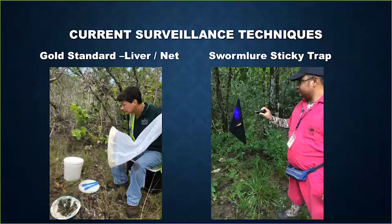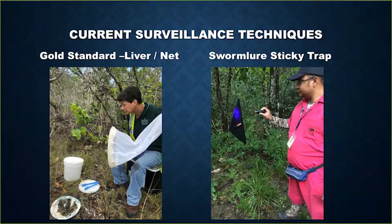The gold standard technique involves a trained technician using liver as bait and a net. That individual would observe a plate of liver for an hour, and if a screwworm fly was observed, catch it in the net. That sounds simple, but it's not. Looking at pictures of a plate covered in flies, the task of catching one can be quite daunting — when you do so, you may end up with a net that has 20, 30, 40, or 50 flies in it. How do you extract that one screwworm fly? It takes a lot of experience and training.